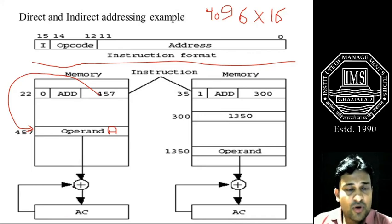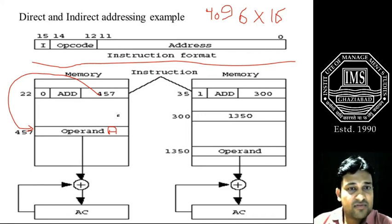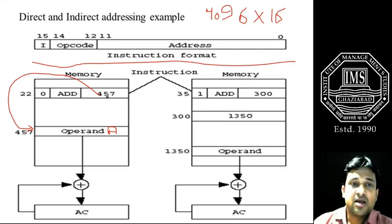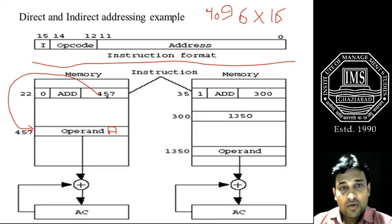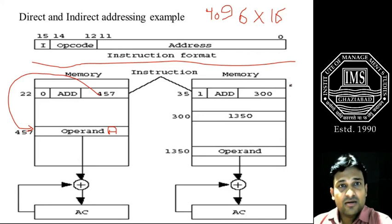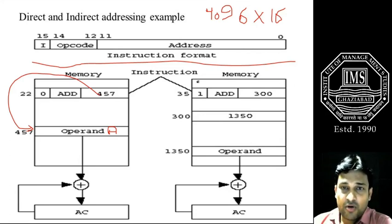In short, in direct addressing we have the address of the operand directly in the address field of the instruction format. Comparatively, if we are talking about indirect addressing...